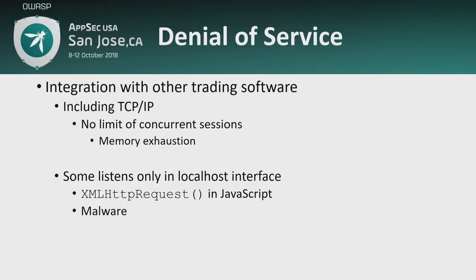Another problem from the 90s still prevalent nowadays is denial of service. Availability is one of the most important things for a trader — you need your trading application right in time to send orders as quickly as possible. If the application doesn't work, you can lose opportunities on the market. Developers are still committing mistakes from the 90s when it comes to TCP sockets.